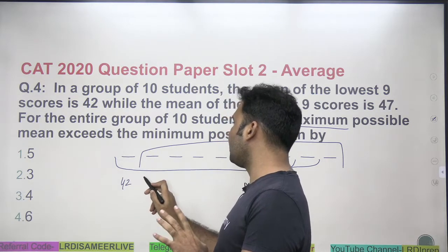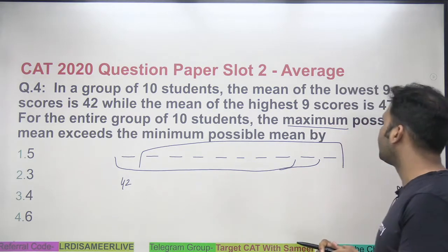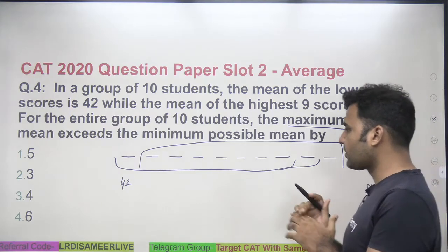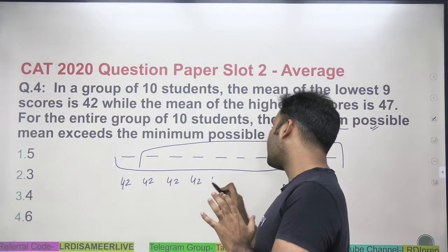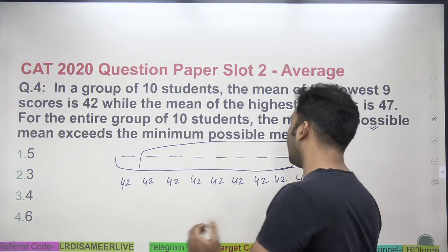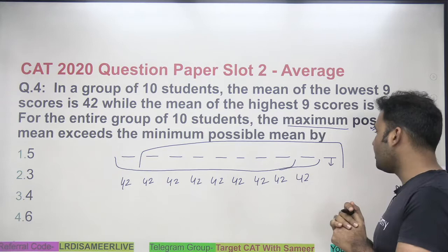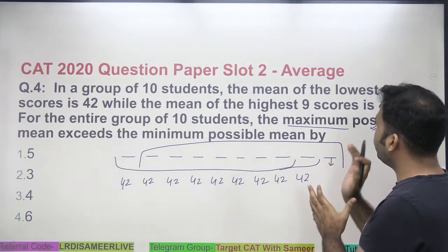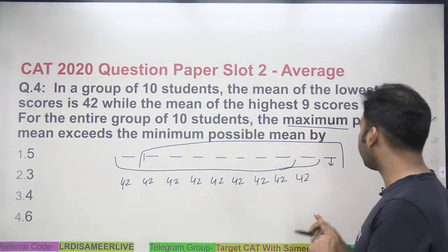The mean of the lowest 9 is 42. To find the maximum possible mean, since the lowest 9 values have an average of 42, if I keep all these 9 values at 42 and then determine what the 10th number should be so that the average of the highest 9 comes out to 47.